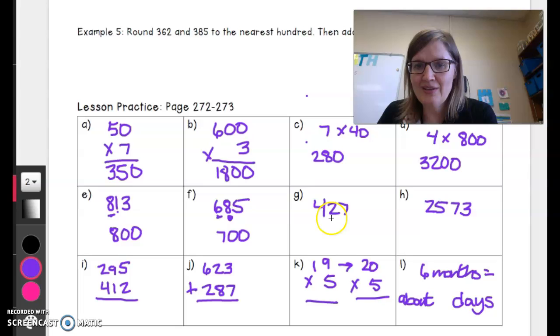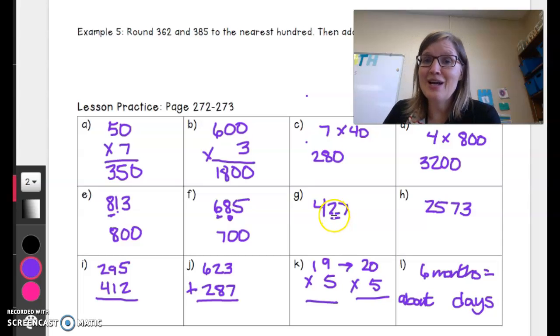425. I look at my hundred column, I look next door, the 2. It's a 2, I know that it's going to be rounded down to 400.